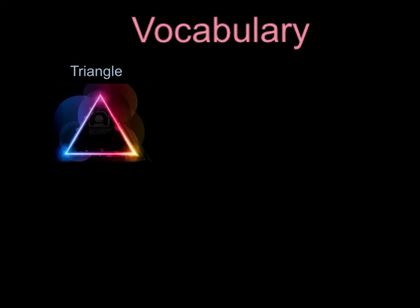Here are some important vocabulary words. When finding the area of a triangle, you will always use two types of measurements. First, we have the base. The base can be any side — a triangle has three possible bases. The base is often chosen to be the side the figure sits on, and the word base also refers to the length of that side. On this triangle, this is the base.